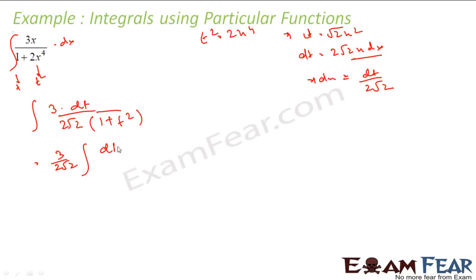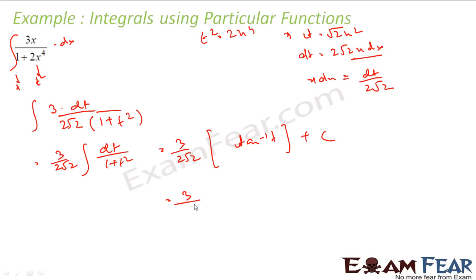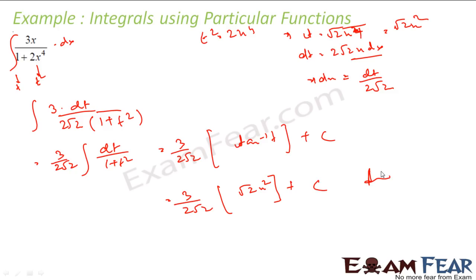This becomes the integral of (3/(2√2)) · dt over (1 + t²). Taking the constant outside, this is nothing but (3/(2√2)) · tan⁻¹(t) plus some constant. Substituting back, t is nothing but √2 · x², so the answer is (3/(2√2)) · tan⁻¹(√2 · x²) plus constant. Nothing complicated — I just converted this into a particular function form and directly used the formula.